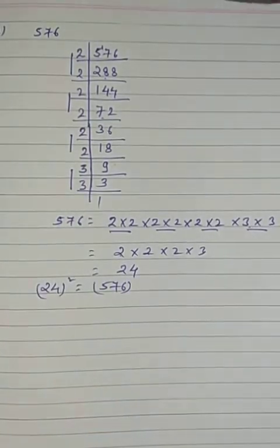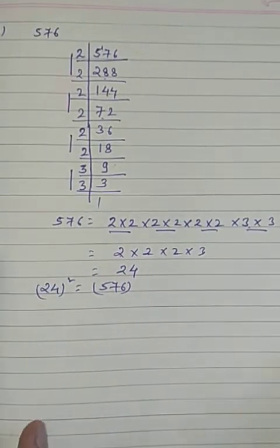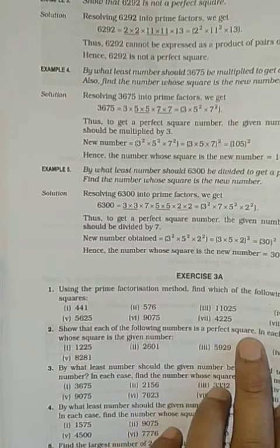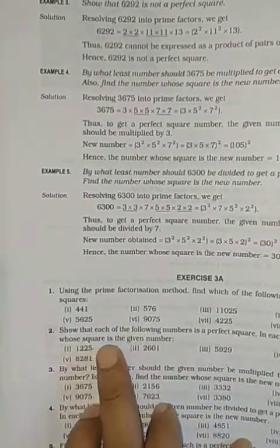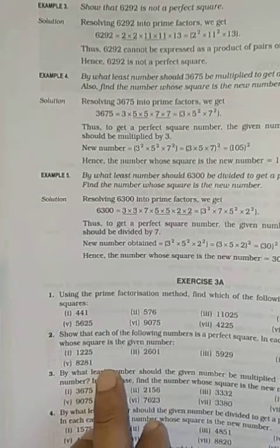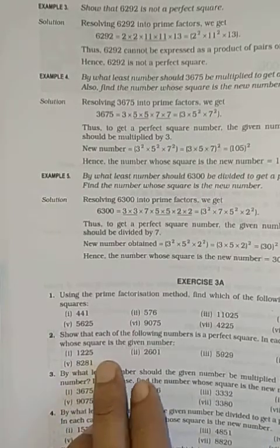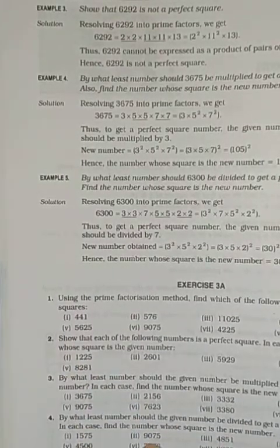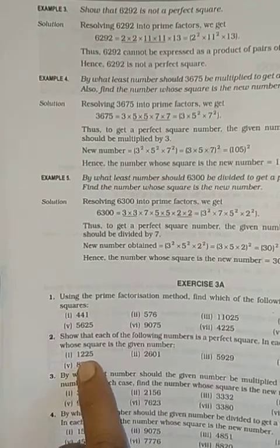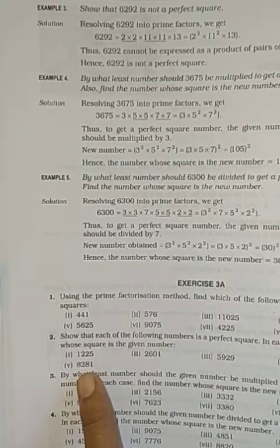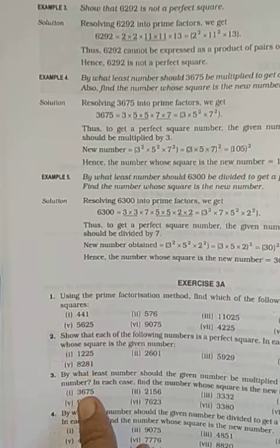यह आप लोगों को समझ में आया होगा। Question number 2 में show करना है कि each of the following numbers is a perfect square, and find the number whose square is given. जैसे यहाँ 1225 दिया हुआ है — आपको बताना है कि 1225 किस नंबर का स्क्वेयर है।